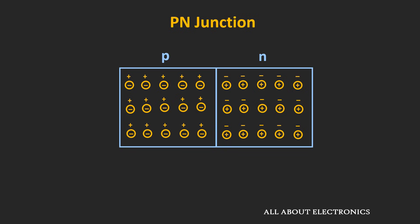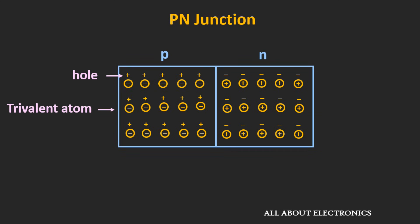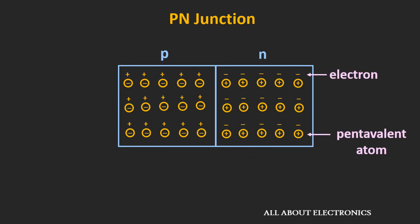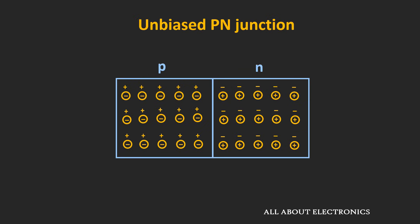Understanding this p-n junction, we can understand all kinds of semiconductor devices. In the p-type region, each circled negative sign represents the trivalent atom and the positive sign represents the hole. Similarly, in the n-type region, each circled positive sign represents the pentavalent atom and each minus sign represents the electron. For simplicity, in both regions the minority carriers are not shown, but in very small quantity they are also present.